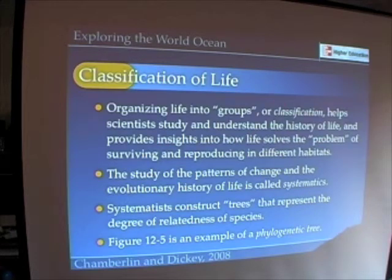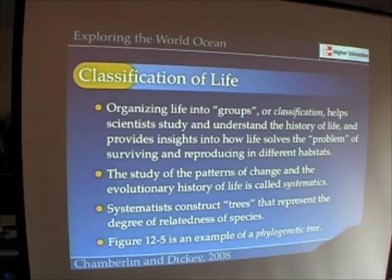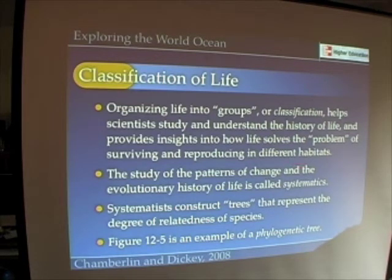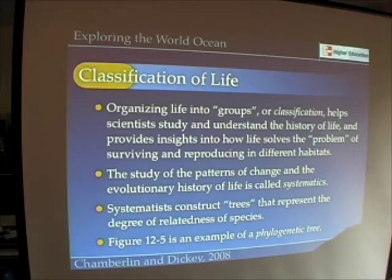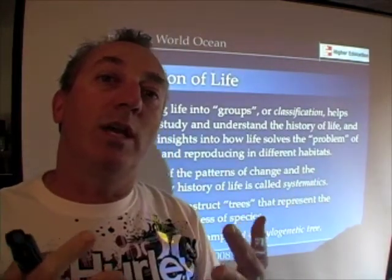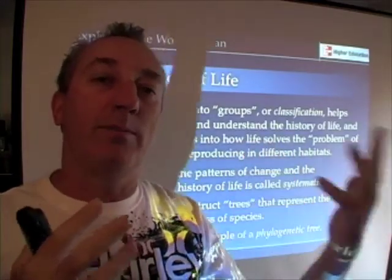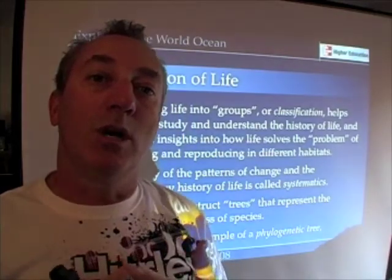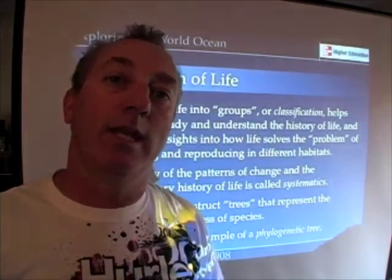Scientists organize life into groups — a process called classification. This process helps us understand the history of life, how life solves the problem of surviving and reproducing in different habitats, and gives us insights into how life might react to changing habitats, especially those caused by human activities. The study of those patterns of change in the evolutionary history of life is called systematics. Systematicists arrange life into what are called phylogenetic trees, showing how related one type of life is to another.